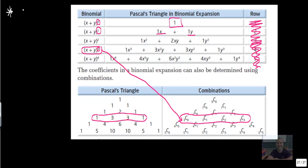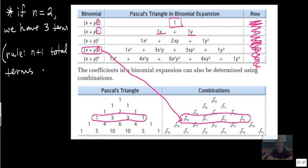So write this down. If n equals 2, we have 3 terms.